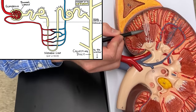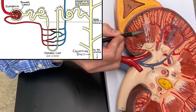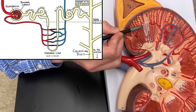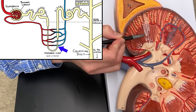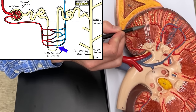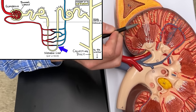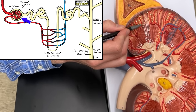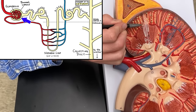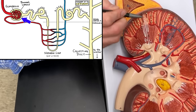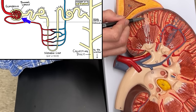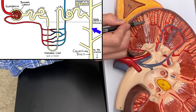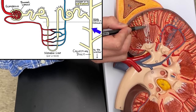Here on my model is one of the nephrons. You'll see this loop that comes down, and you'll notice that loop is also in the diagram. There's going to be this capsule that surrounds some blood vessels — that's right in there, you can kind of see those yellow dots. And there's going to be a collecting duct, which we see on the right side of our diagram that I drew.